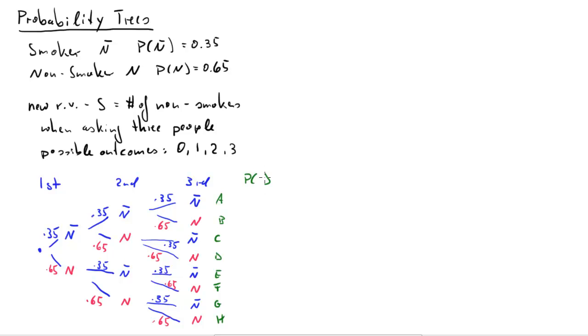Let's think about what's the probability that we get outcome A. So I'll just write that down here. The probability for outcome A. Let's go back to our tree. The probability of picking the first smoker, n-bar, was 35%.